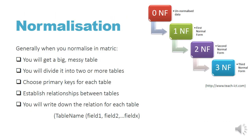In matric, when you normalize — this will be in your theory exam — you will normally get a big messy table. It will have lots of columns or fields and a few records to show you an example of what the data looks like. You'll have to divide it into two or more tables, generally three, four or five tables. You will have to choose primary keys for each table, establish relationships between the tables, and write down the relation for each table. That will look like the table name and then brackets with each field listed, with the primary key underlined.